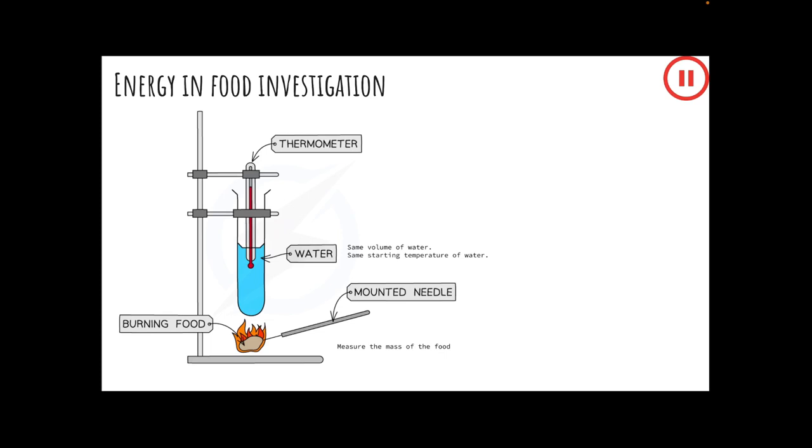Ideally, the starting temperature of the water will be the same. Light the food using a Bunsen burner and hold the burning food under the boiling tube. Make sure the flame is touching the boiling tube. When the food has finished burning, record the temperature of the water again. Let the food cool down, then push what is left of the food off the pin and find its mass. If there is no food left, you would write zero grams for its mass.